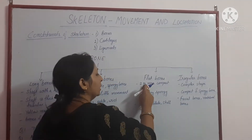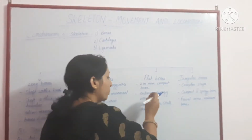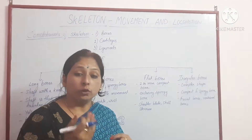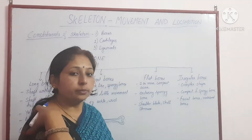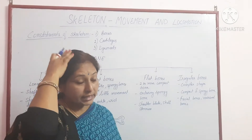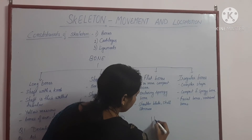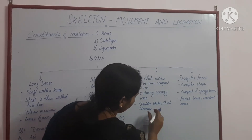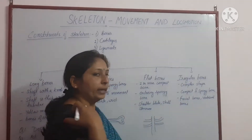Flat bones are made up of two or more compact bones enclosing a spongy bone. They are present in the shoulder blade, skull region, and sternum. The sternum is the front part of the chest where the ribs of the rib cage are joined.